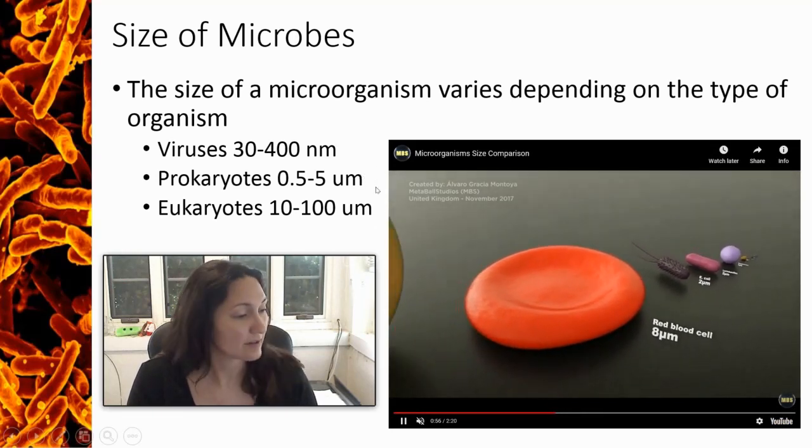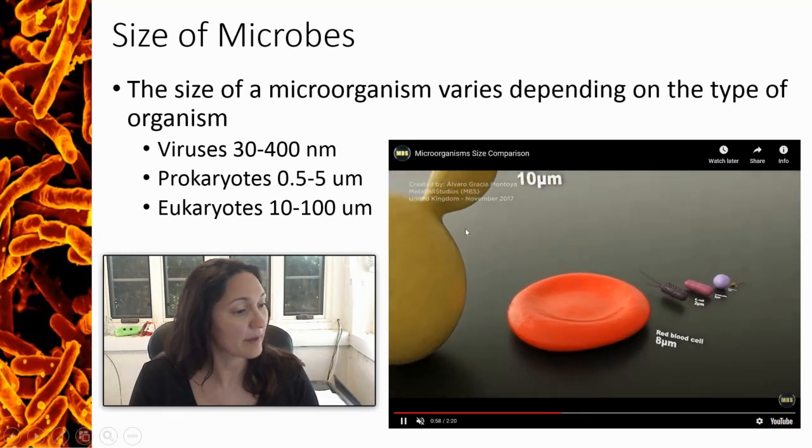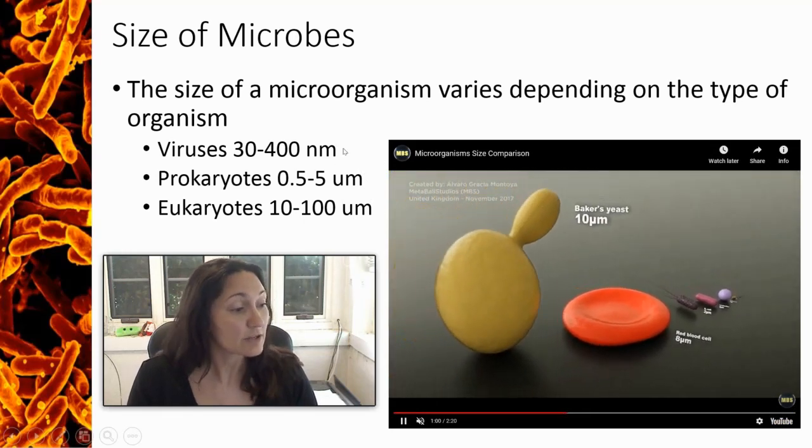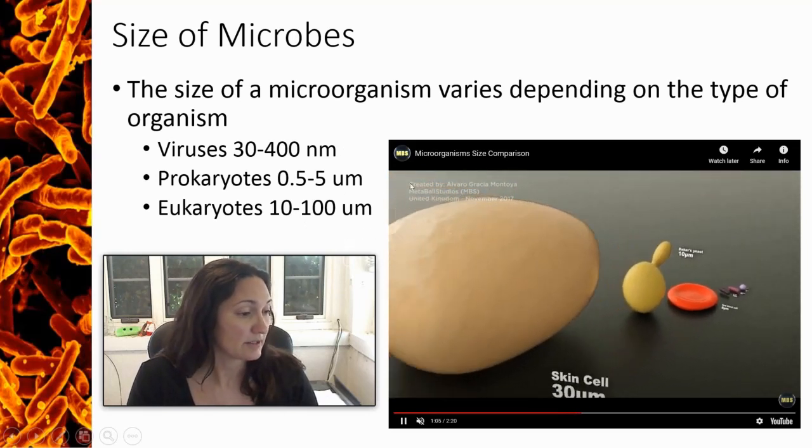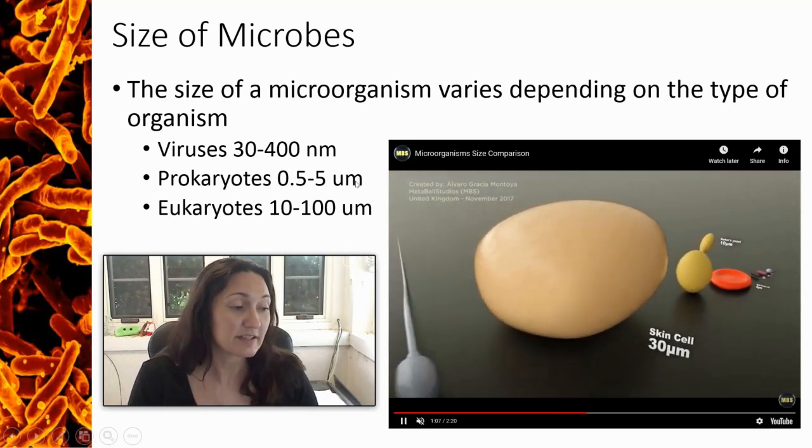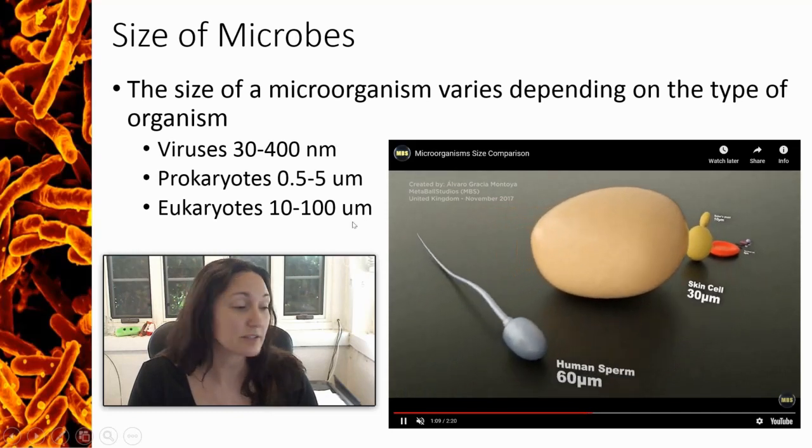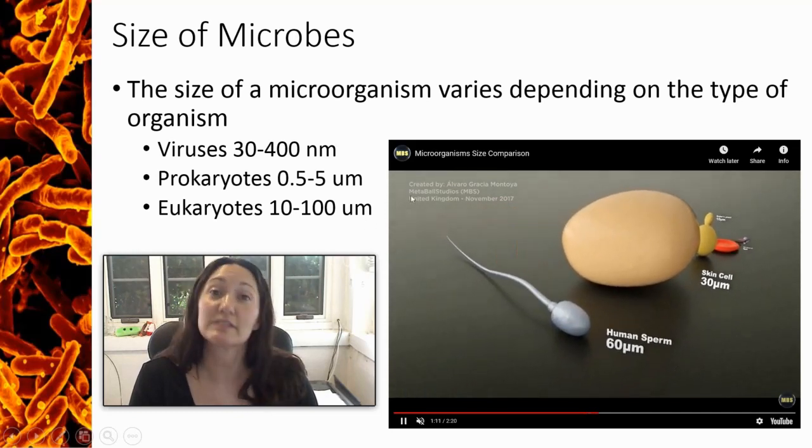We're moving into the eukaryotes. So here's a red blood cell at about 8 micrometers and here's a baker's yeast—these are the yeast you use to make bread. Continuing to go up, here's a skin cell that's about 30 micrometers and a human sperm at about 60 micrometers.